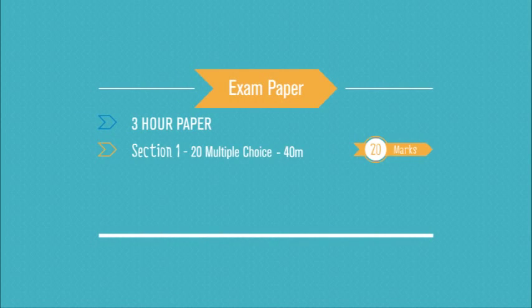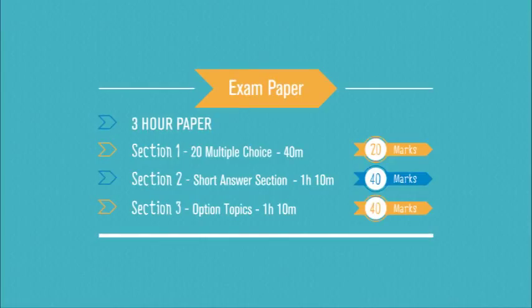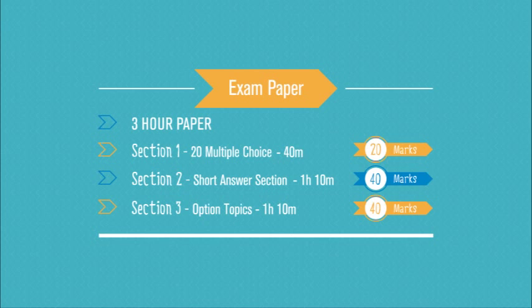There's sometimes a temptation to attempt something that you haven't studied - my suggestion would be to steer clear of that. The HSC exam has the same structure every year, so you can be guided by past HSCs. It's important to note that there are three sections and you have to attempt each one. Section one is multiple choice, worth 20 marks, 20 questions, and you should allow around about 40 minutes for that section.